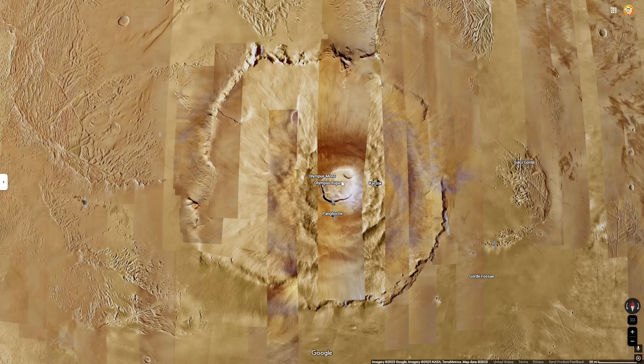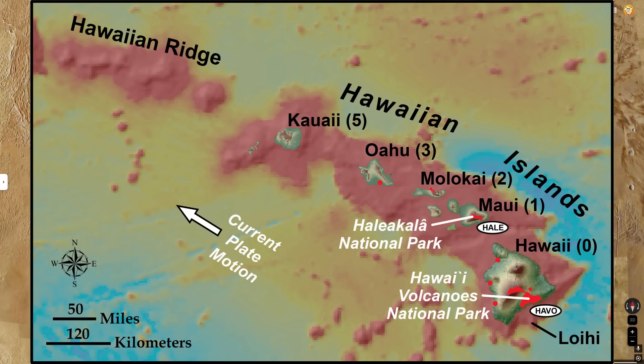One other factor contributing to the size of Olympus Mons is the fact that there are no tectonic plates on Mars. This means that the hot spot — basically the area of weaker surface that lava can flow through — stays in the same spot, which allows these volcanoes to grow higher. This is different from the Hawaiian Islands, where the crust is moving and forming many different islands.